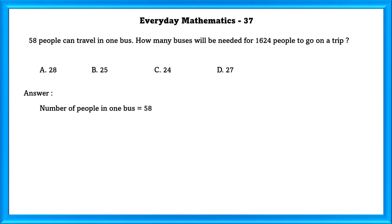Number of people in one bus is equal to 58. Number of buses needed for 1,624 people is equal to 28.